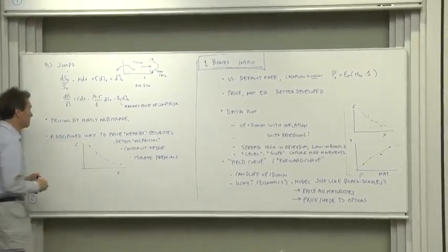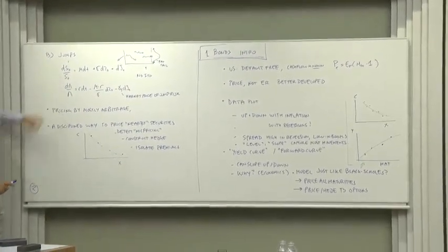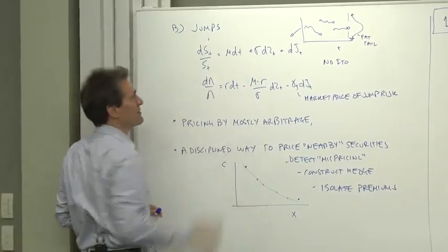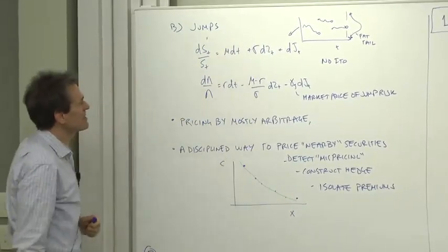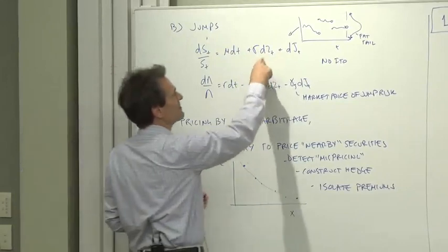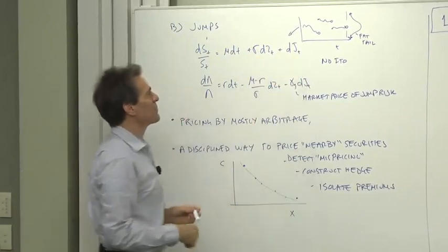The other approach to handling this problem, and the other approach to option pricing models you'll see, is to add jumps. So here, it's the same thing we had before, mu dt plus sigma dz, no more of this varying volatility. But now, in addition to the diffusion term, the stock price can take a jump.